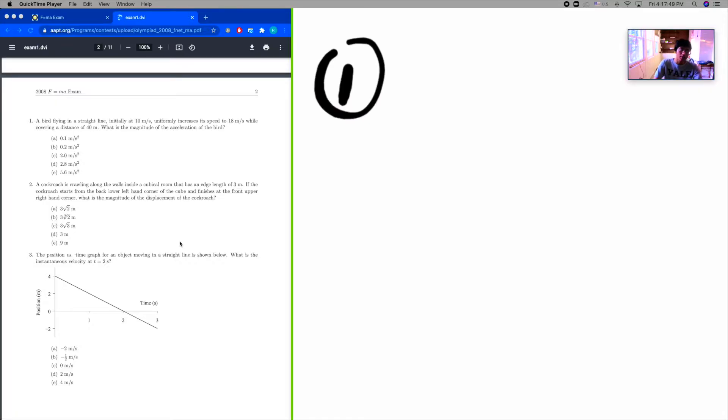Number 1 tells us we've got a bird and it's flying in a straight line, initially at 10 meters per second, uniformly increases its speed up to 18 meters per second while covering a distance of 40 meters.